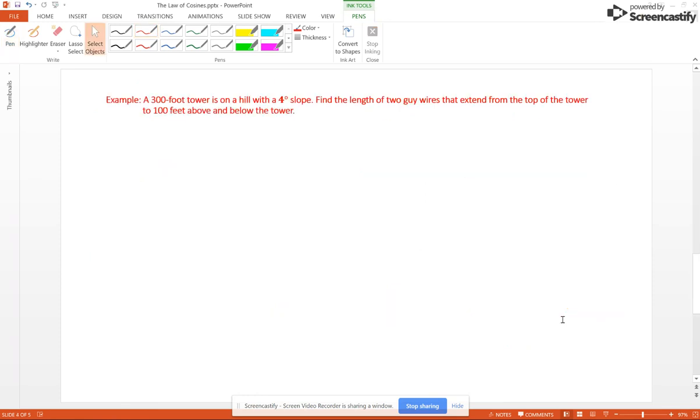Now let's look at a problem real fast. Say we have a 300-foot tower on a hill with a 4° slope. So that means that angle right there is 4°, and this is 300. We want to find the length of the two guy wires that extend from the top of the tower to the ground. And each of these are 100 feet away from the tower. So this gives us basically two triangles.